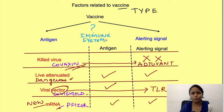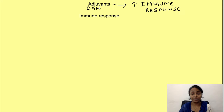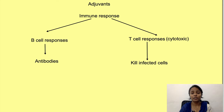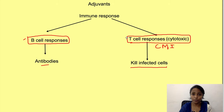How vaccines engage the immune system determines their efficacy. In the case of killed vaccines, the addition of adjuvants to the formula can enhance the magnitude of the immune response — these adjuvants act as the danger signal for the immune system. The type of response also depends on the type of adjuvant. Immune response after vaccination consists of B cell responses, which produce antibodies, and T cell responses — cytotoxic T cells which kill infected cells (cell-mediated immunity). For COVID, we want activation of both responses.